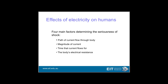We've looked at the effect of electricity on humans, and obviously safety is absolutely paramount. There are four main factors determining the seriousness of a shock: the path of current flow — if it crosses between arms across your heart, you've got a potential problem; if it's across your foot, less so. Also: magnitude of the current, time of the current flow, and the body's electrical resistance at that time.